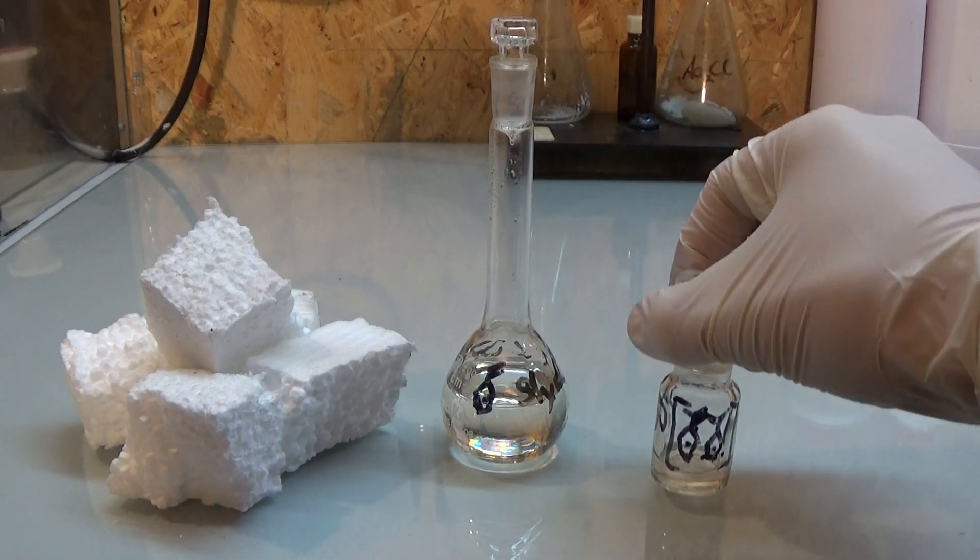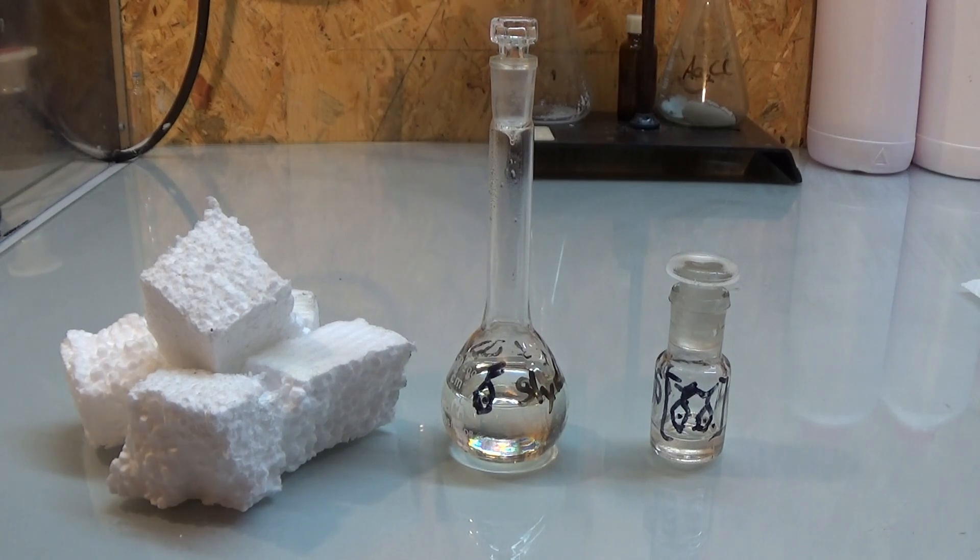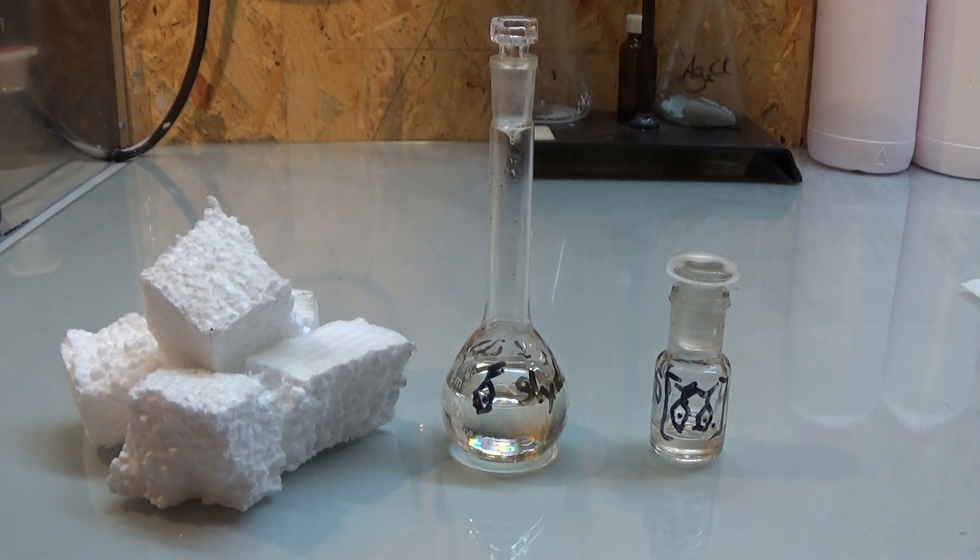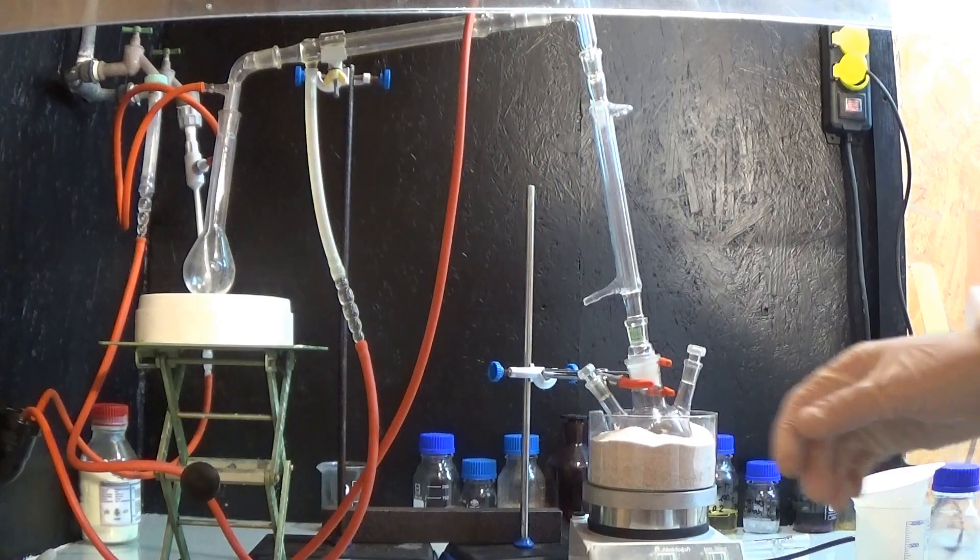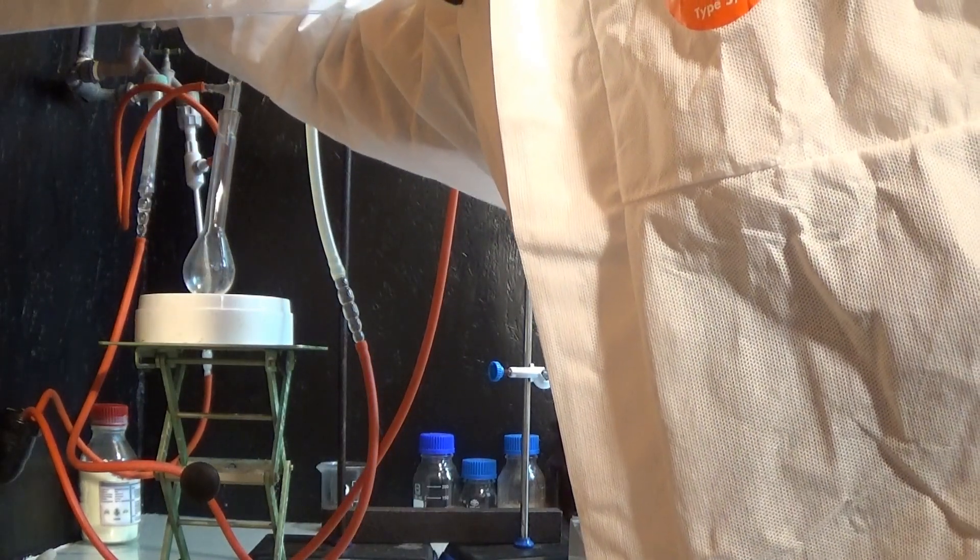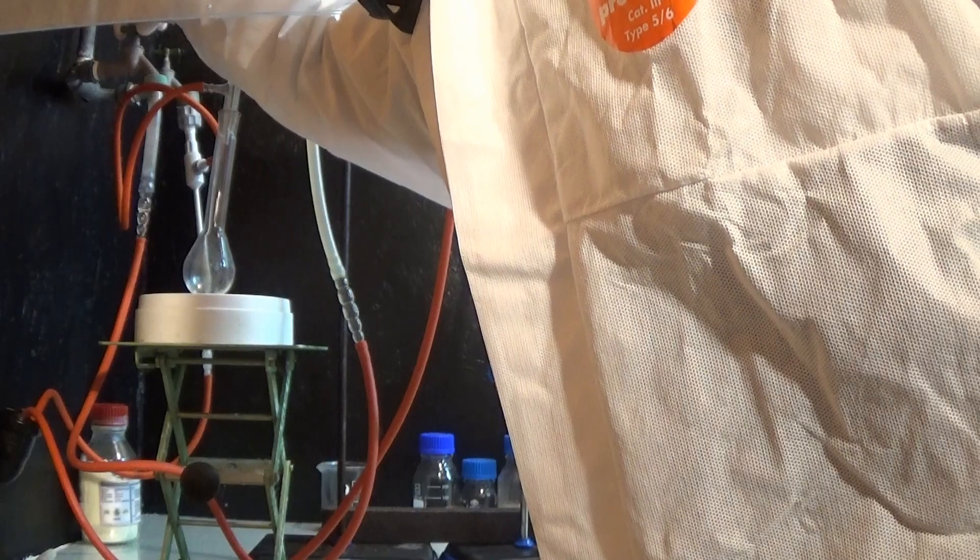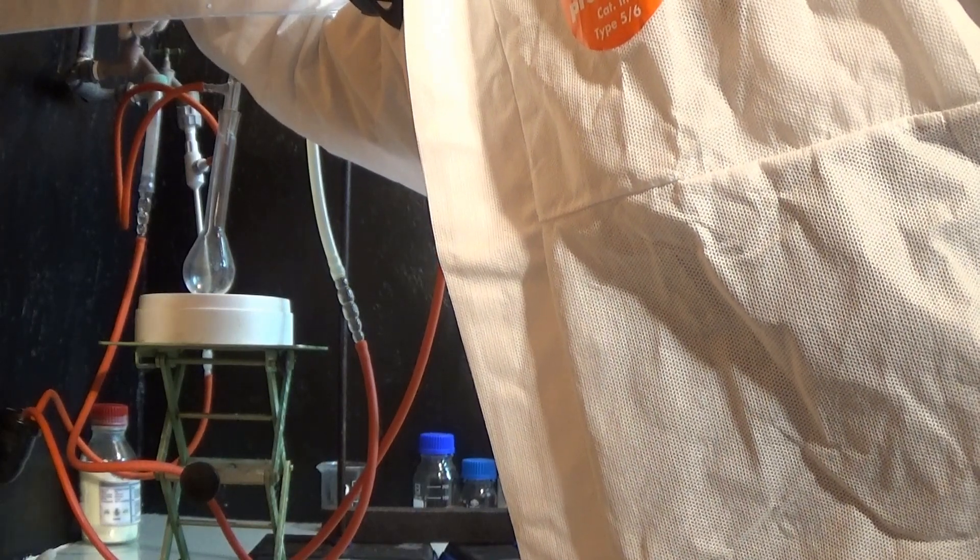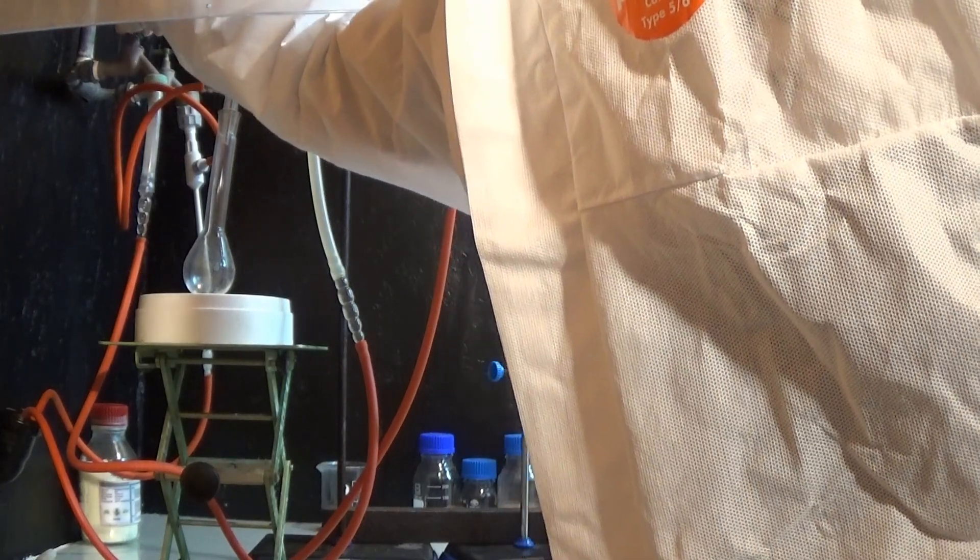In the last video we obtained the crude styrene and stabilized it with some hydroquinone. So now we have to fractionally distill the whole thing in a vacuum. Therefore I set up a fitting apparatus and hooked the condenser and the vacuum pump up to the water line.